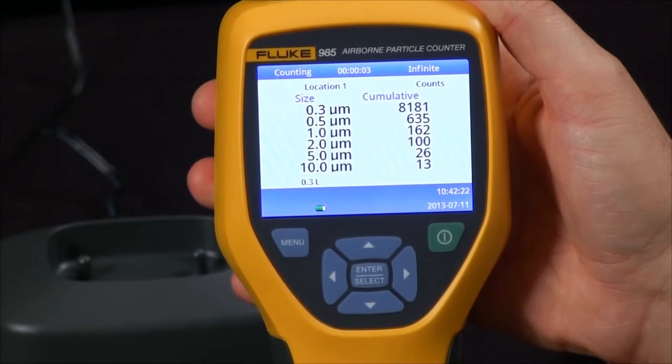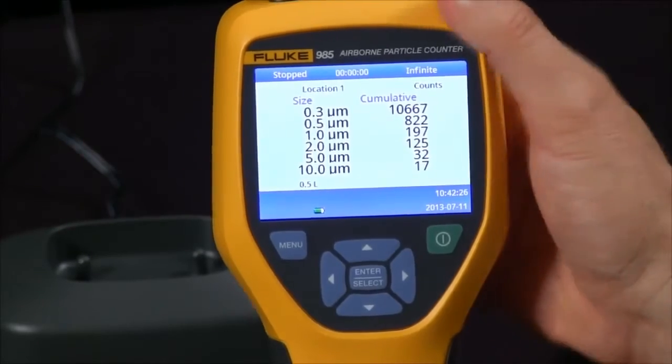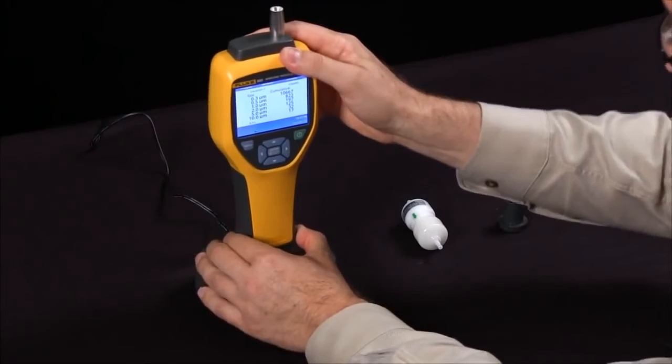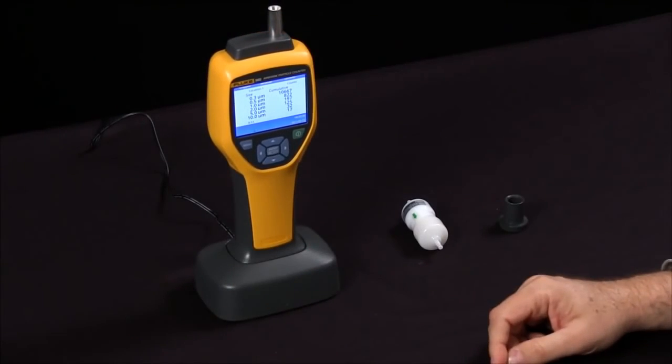Once you have your readings, you can simply place the 985 particle counter in the base and download your data, as well as charge the device for future use.